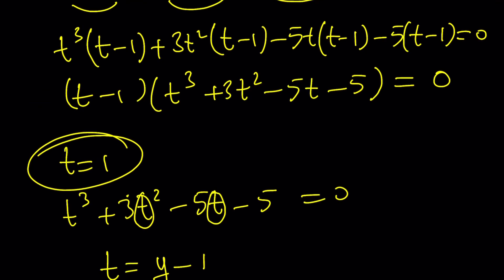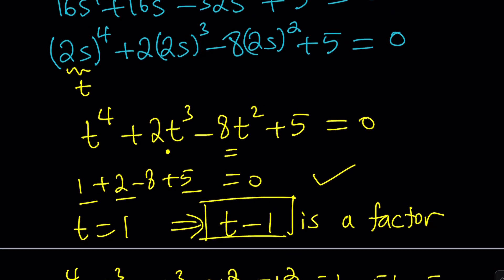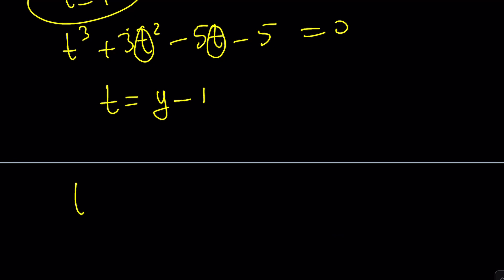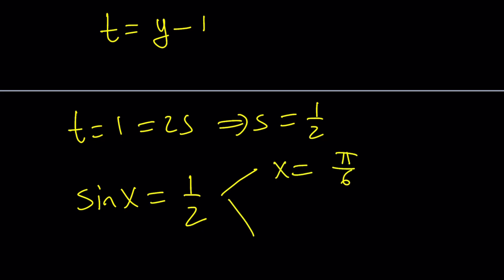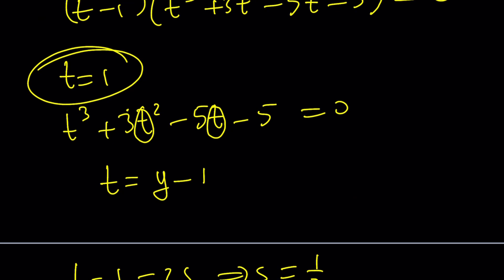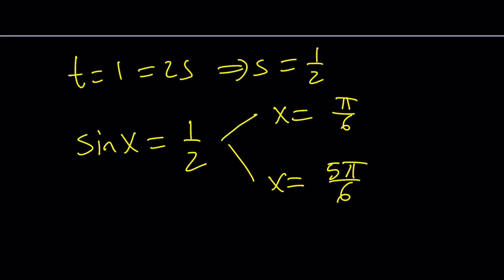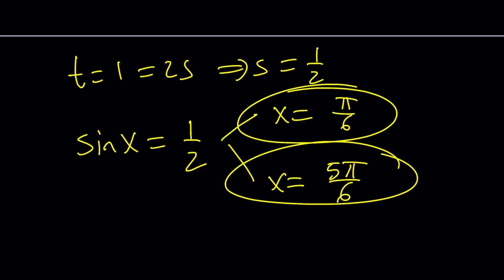Picking up from t equals 1: remember, t was 2s. So if t equals 1, then 2s equals 1, which means s equals 1 half. Since s was sine of x, if sine of x equals 1 half, we get two solutions between 0 and 2π: x equals π over 6, and x equals 5π over 6.